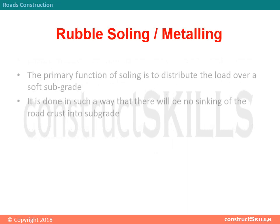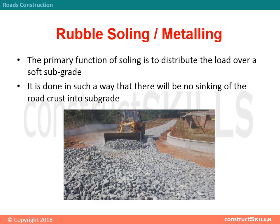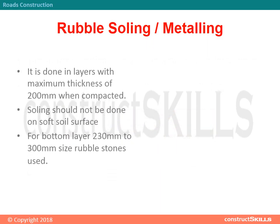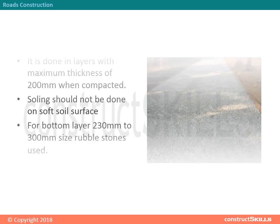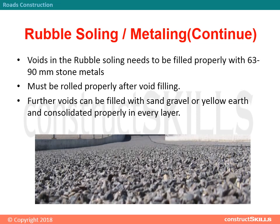Rubble Soling or Metaling: The primary function of soling is to distribute the load over a soft subgrade, ensuring there will be no sinking of the road crust into the subgrade. It is done in layers with a maximum thickness of 200 mm when compacted. Soling should not be done on a soft soil surface. For the bottom layer, 230 mm to 300 mm size rubble stones are used. Voids in the rubble soling need to be filled properly with 63 to 90 mm stone metals, and must be rolled properly after void filling. Further voids can be filled with sand, gravel, or yellow earth and consolidated properly in every layer.